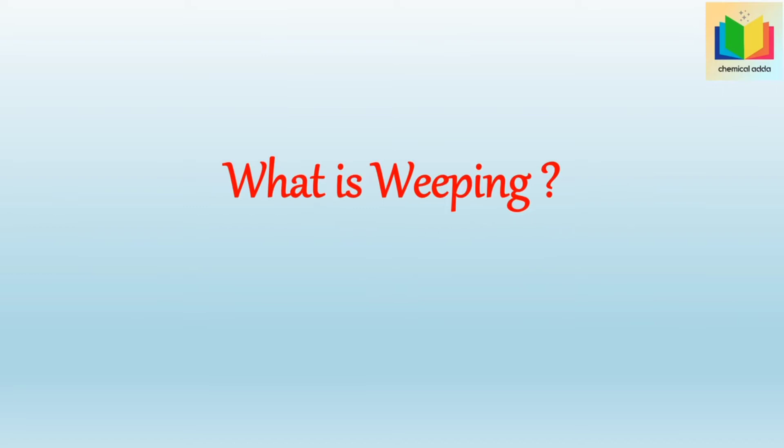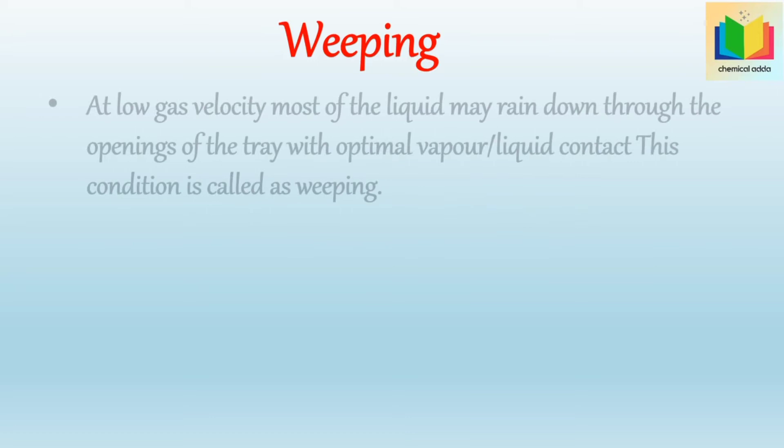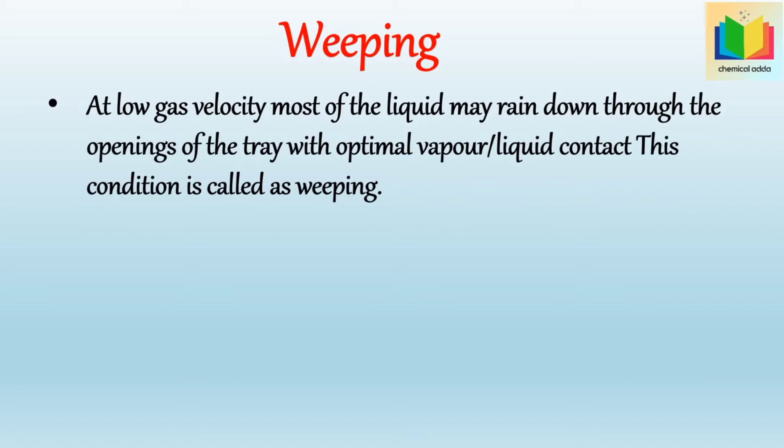What is weeping? At low gas velocity, most of the liquid may rain down through the openings of the tray without optimal vapor-liquid contact. This condition is called weeping. This problem mostly arises in the sieve tray.